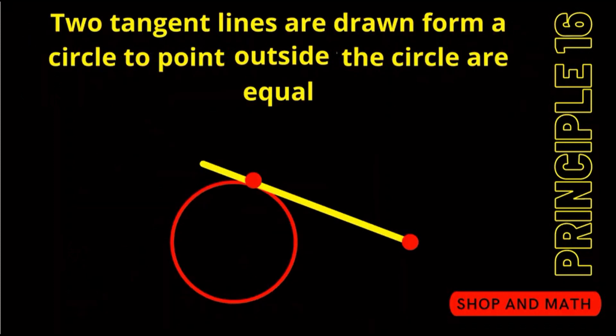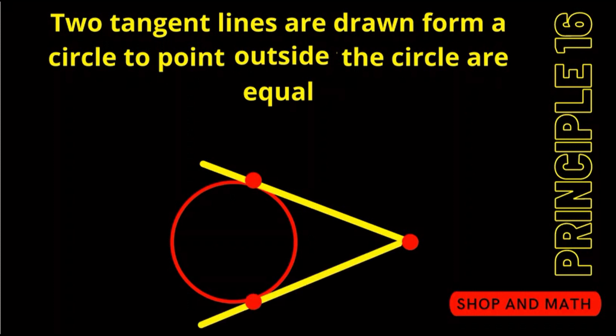Principle 16. Two tangent lines are drawn from a circle to a point outside of the circle. There we go we got two here and they're equal. So therefore if we turn around and we say that AC equals BC no matter where you put the lines to a given point on the outside they're going to be equal to each other.